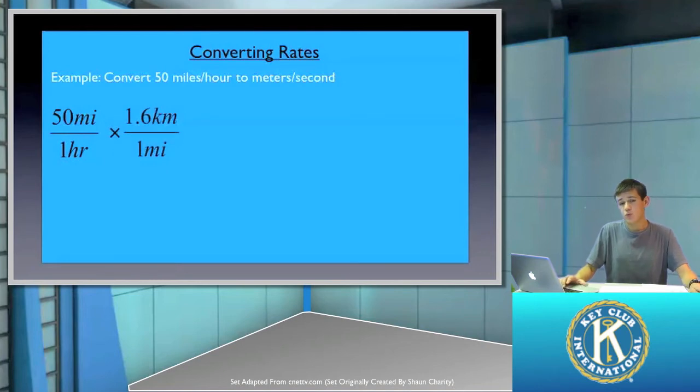One mile is equal to 1.6 kilometers. As you can see, the miles are diagonal from each other because we want them to cancel out. One kilometer is equal to 1,000 meters. Giving us meters is what we want as our ideal and our ending unit. So what will ultimately happen is the distances of miles and kilometers will cancel out, leaving us with meters.